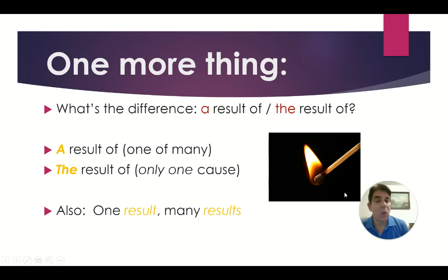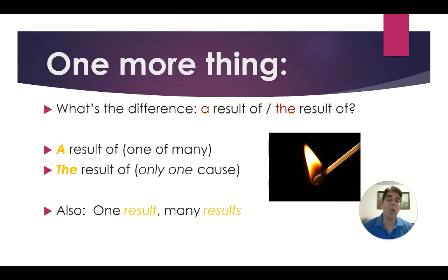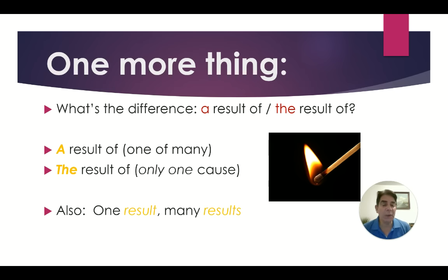What's the difference between 'a result of' and 'the result of'? Well, 'a result of' can mean one of many things — one of many causes or one of many effects. Whereas 'the result of' means only one cause or only one effect. Also, the noun 'result' is countable, meaning we can say one result or many results.